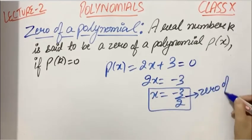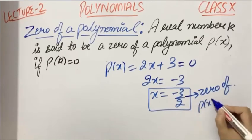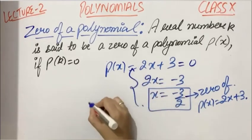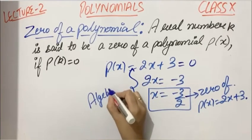-3/2 is that value where the polynomial attains the value 0. That means -3/2 is the zero of polynomial P(x) = 2x + 3. This method is known as the algebraic method of finding zeros.